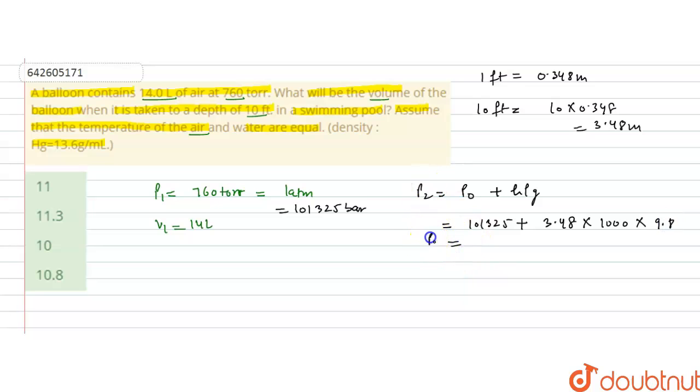So this value of P2 that will be in Pascals. Sorry, this value is also in Pascal, not in bar. So this value is total equals to 131125.4 Pascal.